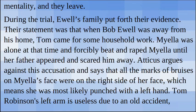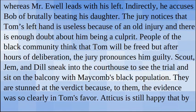During the trial, the Ewell family put forth their evidence. Their statement was that when Bob Ewell was away from his home, Tom came for some household work. Mayella was alone at that time and Tom forcibly beat and raped her until her father appeared and scared him away. Atticus argues against this accusation and says that all the marks of bruises on Mayella's face were on the right side of her face, which means she was most likely punched with a left hand. Tom Robinson's left arm is useless due to an old accident, whereas Mr. Ewell leads with his left. Indirectly, he accuses Bob of brutally beating his daughter. The jury notices that Tom's left hand is useless because of an old injury and there is enough doubt about him being the culprit.